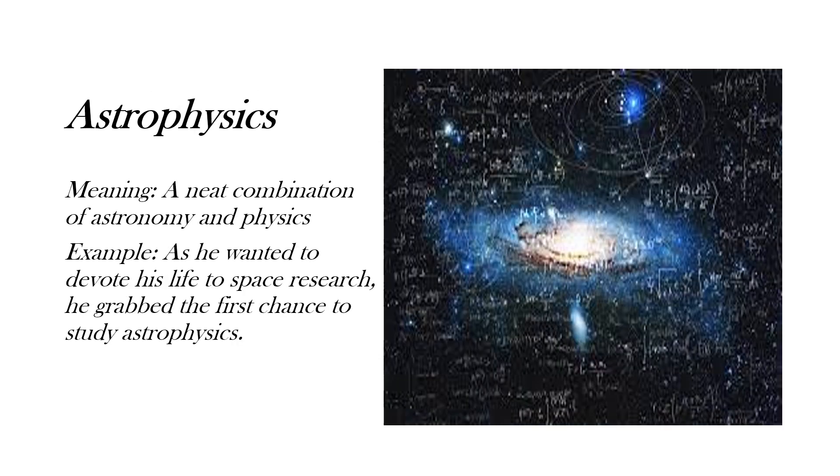Next is astrophysics. In last few words, I have mentioned about this word astrophysics. So let's know what the astrophysics word means. It means a neat combination of astronomy and physics. It is defined as a subject. You can take up this subject during your bachelors and masters if you want. Here our example is, as he wanted to devote his life to space research, he grabbed the first chance to study astrophysics.